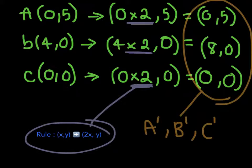As the formula says here, x is being multiplied by 2. So here on point A, zero is x. Zero is multiplied by 2. Five is y, stay the same. And this is the answer. And you do the same thing to B and C. And all these answers right here is equal to A', B', and C', which means we have found the coordinates for the image.